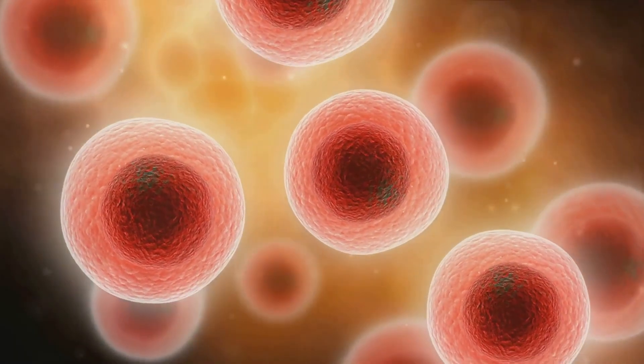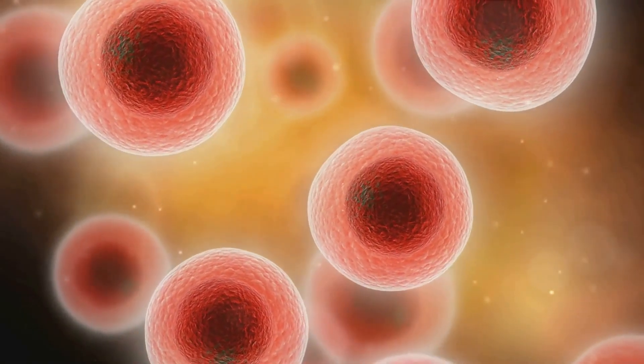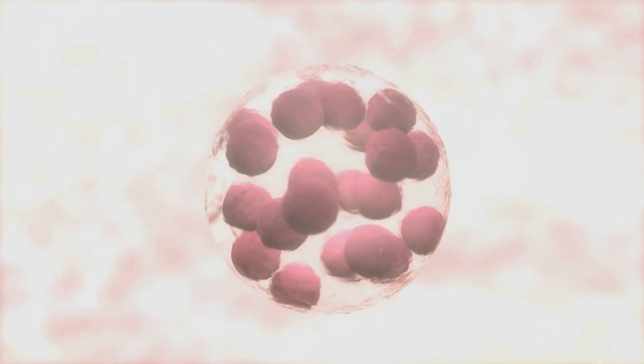Our bodies are home to a league of extraordinary cells, the white blood cells. These cells come in two main types, each with its unique structure and function. First we have the granulocytes, which include the neutrophils, eosinophils, and basophils.